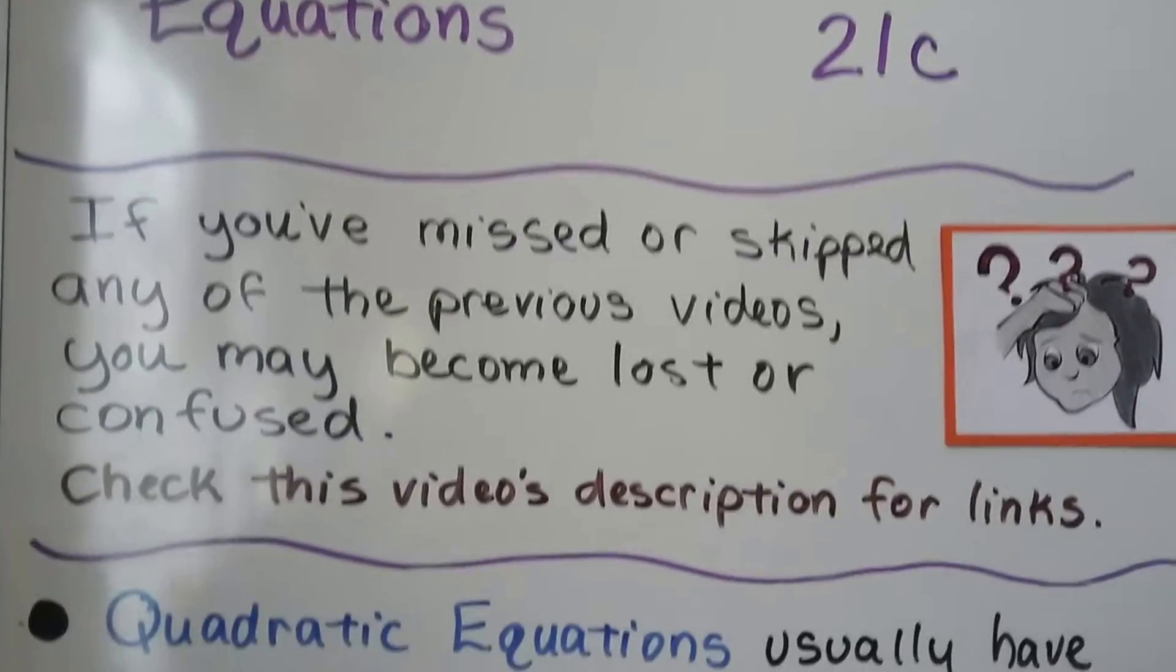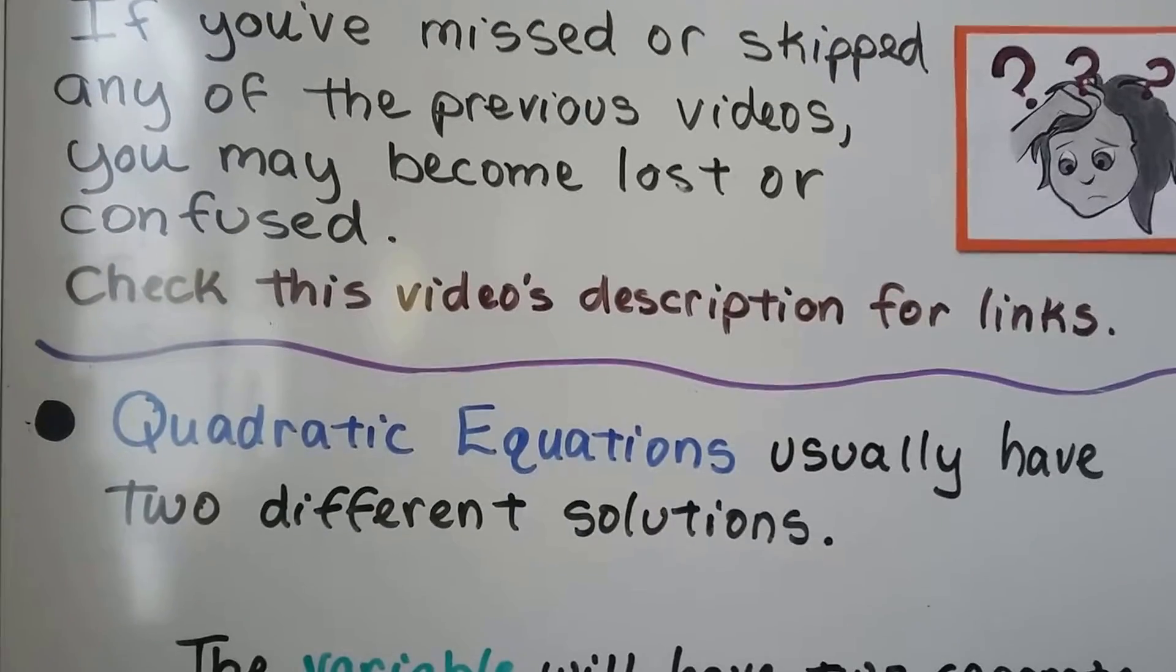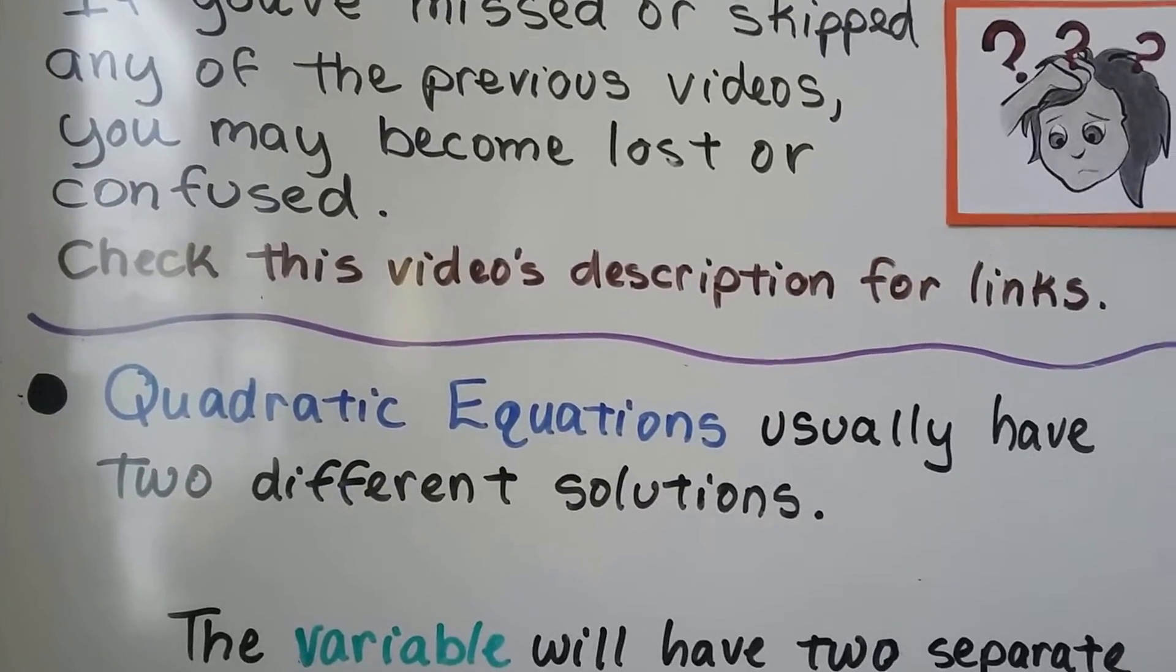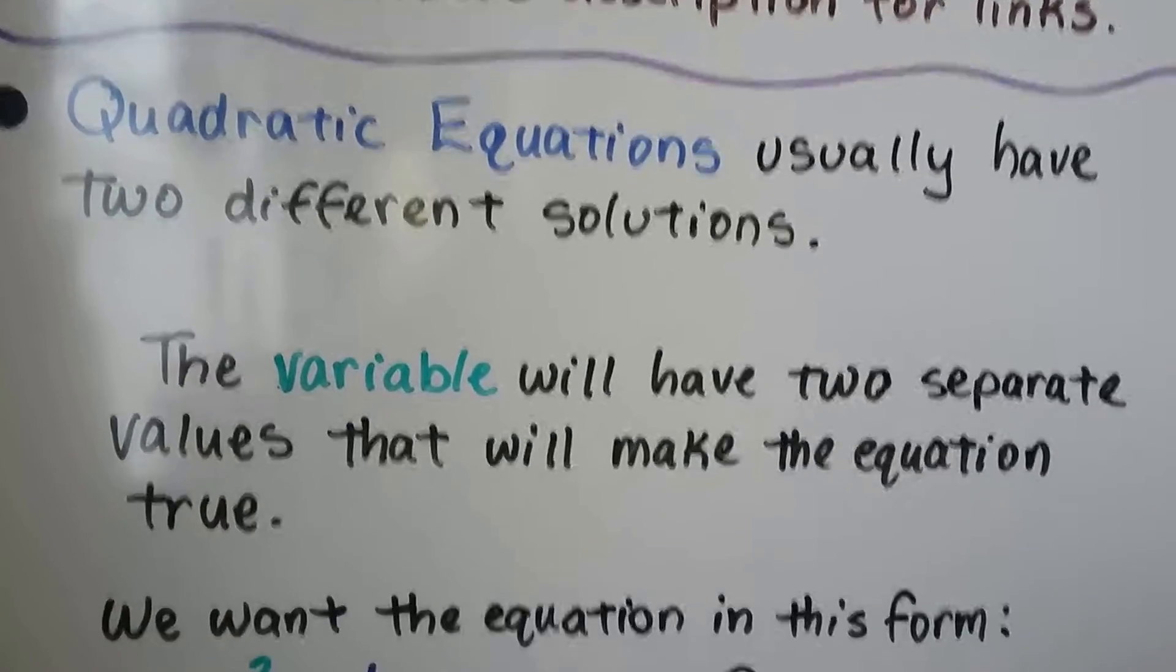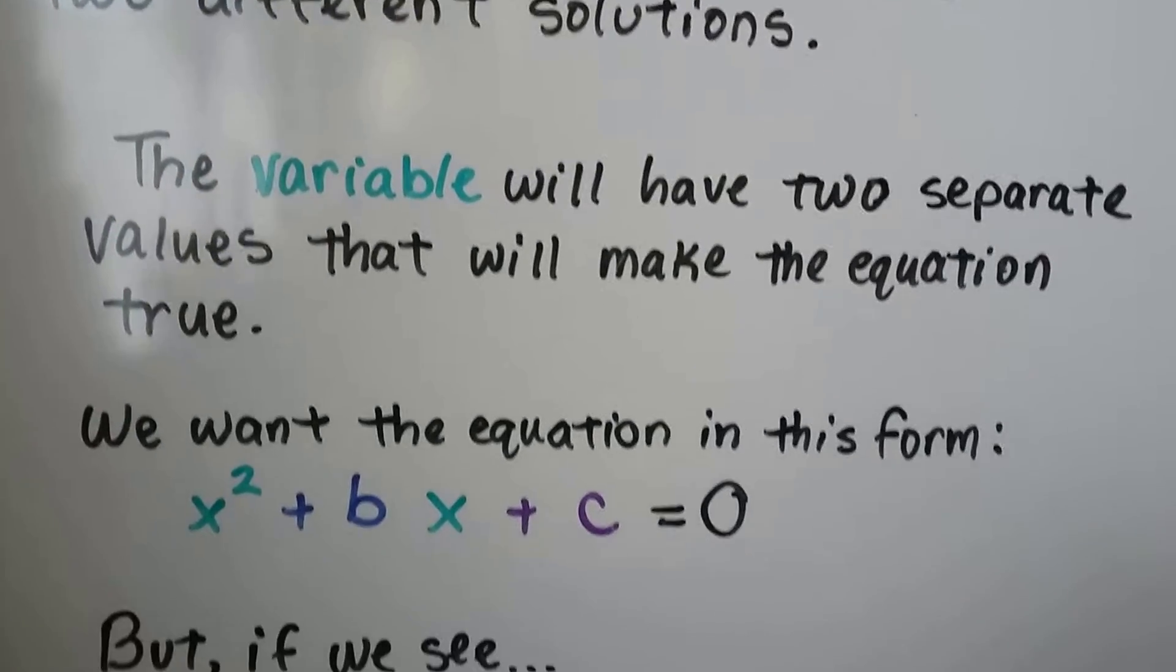Of course, I've got those videos linked in this description. Quadratic equations usually have two different solutions. The variable will have two separate values that will make the equation true.